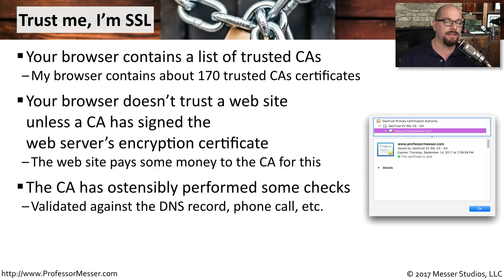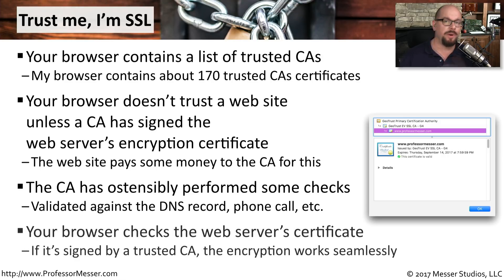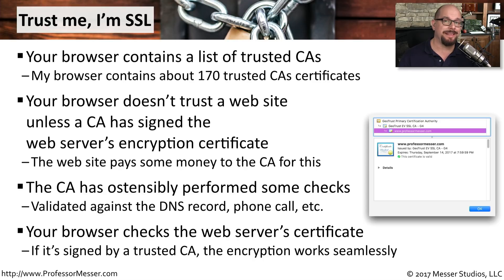The certificate authority has already gone through some type of checks to make sure that the person getting the signed certificate really is the appropriate person. Sometimes this is validation against the DNS record, sometimes it's a phone call, or it could be other types of security checks as well. When your browser connects to the third party website, it checks the web server certificate and looks to see who signed it, then compares that signature with the known set of trusted certificate authorities already in the browser. If it matches, that particular website is trusted. If it doesn't match, your browser will normally display a message saying the connection is not trusted and you should not continue communicating with that server.